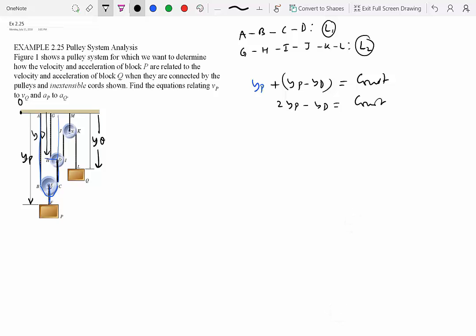So if I take the delta on both sides, what do we get? I get 2 delta YP minus delta YD equal to delta constant is always 0. If I differentiate it, I get 2VP minus VD equal to 0. I differentiate once more, I get this. So I have these two relationships for velocity and acceleration. But velocity and acceleration of point D is not something that we want. What we're looking for is the velocity and acceleration of point Q.